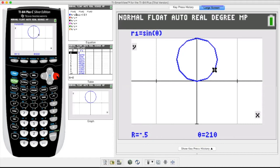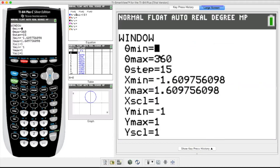So there you have it. You can keep clicking trace and go around until your heart is content. Notice that it will stop at 360 because if you go back to window, that is where I told it to stop.